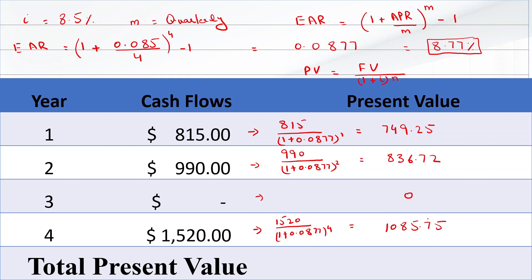In the last step, we will add all these present values to find the total present value, which equals $2,671.72. That will be the present value of all cash flows.